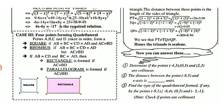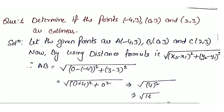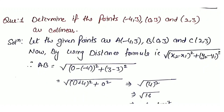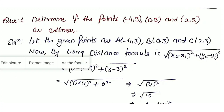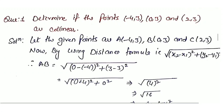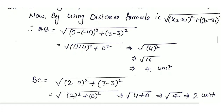Now the practice questions. Question 1: Determine if the points A(−4, 3), B(0, 3) and C(2, 3) are collinear. Using the distance formula, AB: under root of (0 minus (−4))² + (3−3)² equals under root of 4² + 0 = under root 16 = 4 units. BC: under root of (2−0)² + (3−3)² = under root of 4 = 2 units.